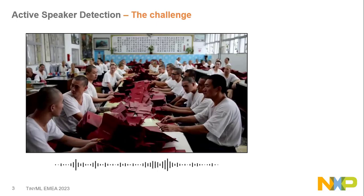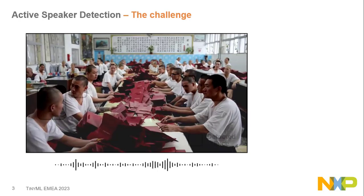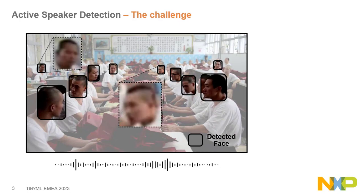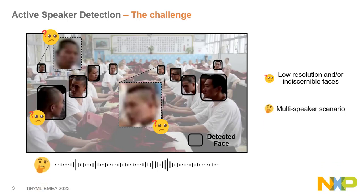For humans, it's quite easy to see if someone is speaking or not. But for a machine, it's much more difficult. First, there can be plenty of potential speakers in a scene, and sometimes the resolution may be too low for the algorithm to detect lip movement — especially on embedded devices where you don't have 4K resolution. The second challenge is the multi-speaker scenario: when someone is speaking, the algorithm may associate that speech with all individuals in the scene, creating ambiguity in the learning process.